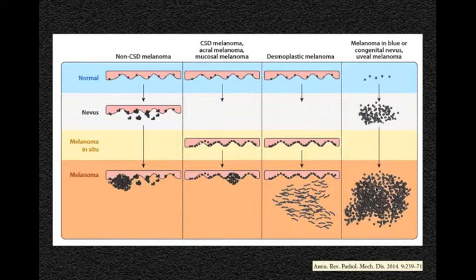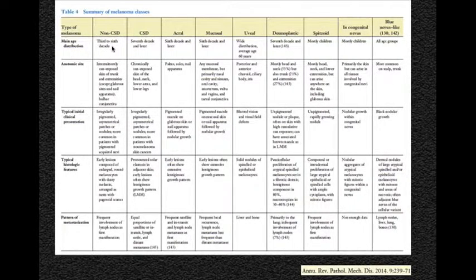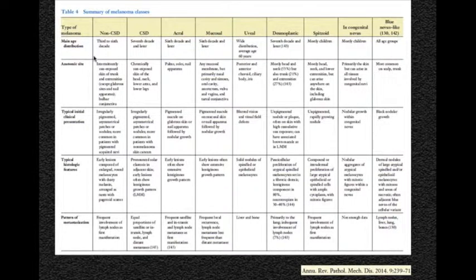Whereas smaller type lesions will be more like the non-CSD melanoma group. Going through the categories, in the non-cumulative sun-induced type lesions occur in the third to sixth decade; in cumulative sun-induced lesions like lentigo maligna type tumors, the seventh decade and older. Acral nevi, mucosal nevi, uveal, desmoplastics, spitzoid lesions — so it is a very good summary. Because this lecture is rather long, I don't have time to go over all these categories, but it is an interesting view and interesting how it evolved over time.